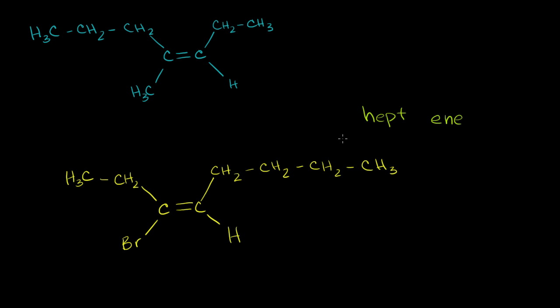Let me write it out a little bit further to the left: hept. And then we have to figure out where the double bond is. We always want to start numbering our carbons from the direction that bumps into the double bond first. The double bond is closer to this end of the chain than that end, so we're going to start numbering here. One, two, three, four, five, six, seven. And so the double bond starts on the three carbon. So it is hept-3-ene.